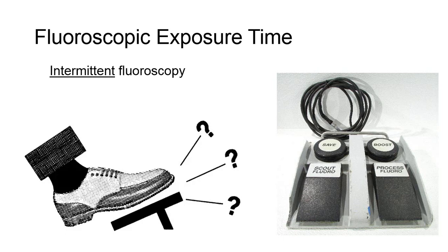A good practice for limiting exposure is the utilization of intermittent fluoroscopy. If the radiologist is examining a patient's stomach full of barium that isn't emptying, they likely won't stand on the exposure switch for the entire time it takes for the stomach to begin emptying. They may choose to periodically expose for a fraction of a second to check if contrast has begun its travel into the duodenum. Once it has, the dynamic portion of the exam may continue.